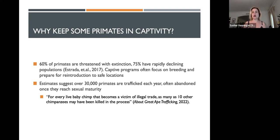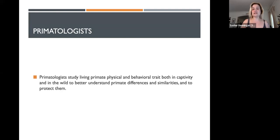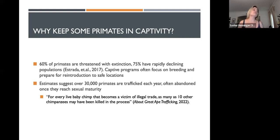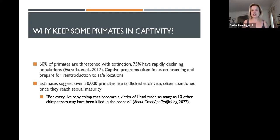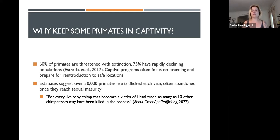Primates are of course studied in the wild where possible. But keep in mind that there's a wide range of things happening in the wild that are causing these populations to decline, including human encroachment, deforestation for the sake of land but also for products like palm oil, which is something that's leading to the rapid endangerment and near extinction of the orangutan.